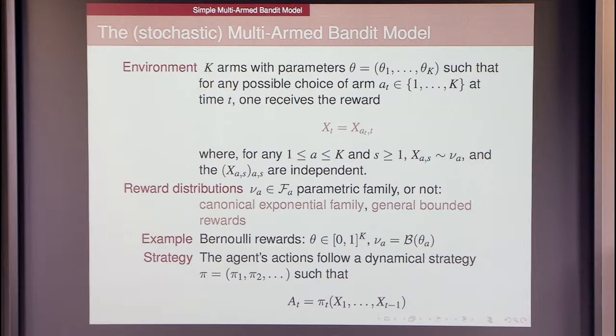The model is well known, but maybe not in this community. It's very close to what Peter was talking about. You have K options among which you have to choose sequentially. At each time you choose option number A, you observe a reward from arm number A that is drawn according to some probability distribution nu_A, and you assume that what happens on the different arms is independent.